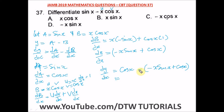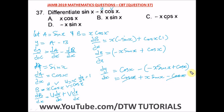Open up the bracket — the negative multiplies everything inside. So we get cos x, then minus times minus gives positive x sine x, and minus times positive gives negative cos x. The two cos x terms cancel out, leaving us with x sine x. So our answer is x sine x, which is option B.